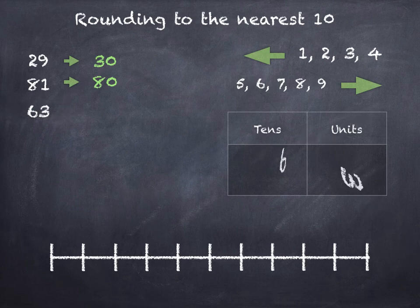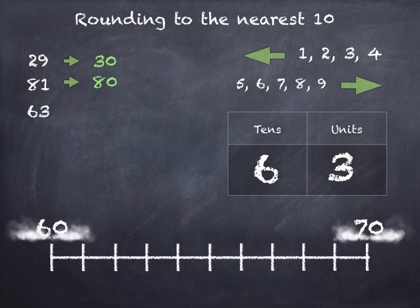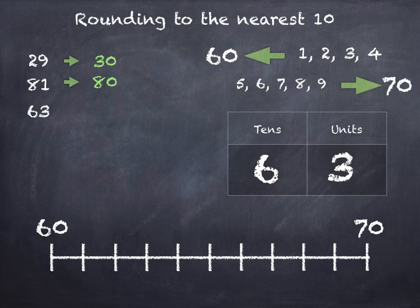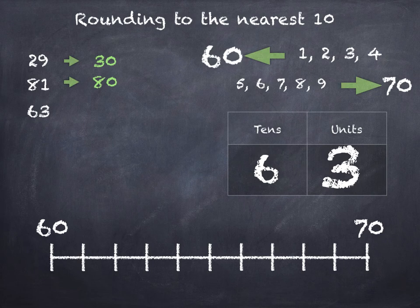63. 6 tens and 3 units. 63 sits between 60 and 70 on the number line, so we can round down to 60 or round up to 70. The units digit is 3 so that tells us we will be rounding down to 60. And if we put 63 on the number line we can see it's closer to 60 than it is to 70.